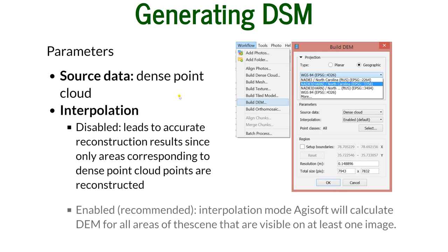For interpolation, you can have disabled or enabled. Disabled leads to accurate reconstruction results because only areas corresponding to the dense point cloud are reconstructed. But if you have holes, or if one of the DSM raster cells would be in an area where there is no point, you will have a hole in the final DSM. If you want to avoid that, you choose enabled interpolation, so Agisoft will calculate the DEM for all areas of the scene that are visible on at least one image.